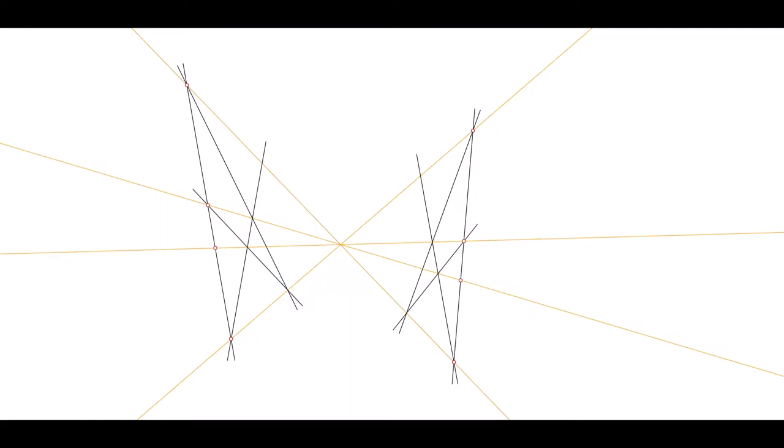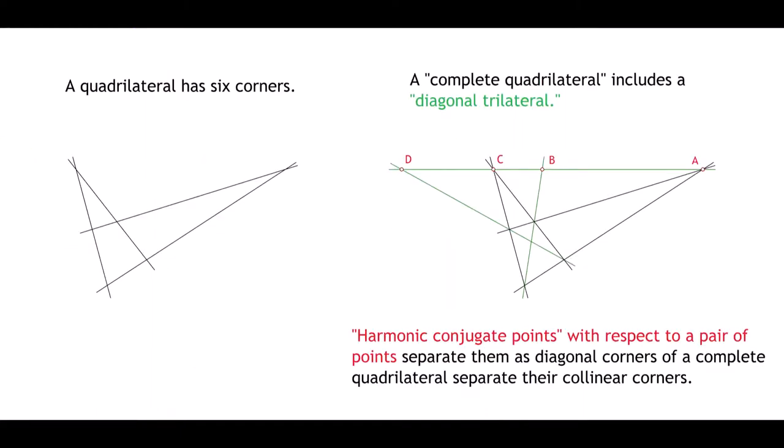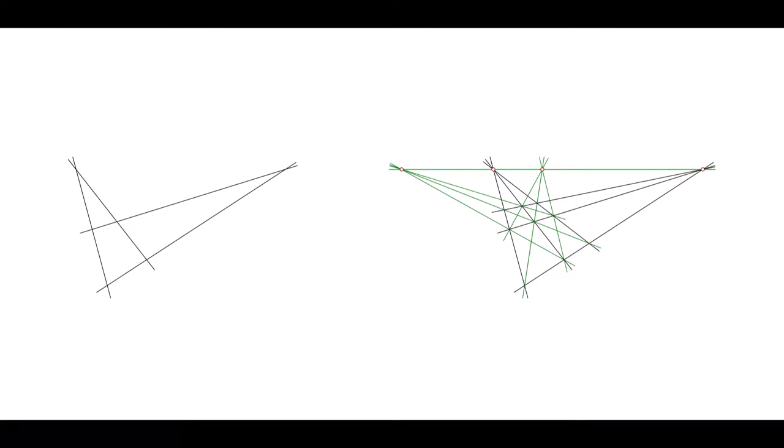We'll introduce projection the time after next. D is called the harmonic conjugate of B with respect to A and C. A and C are corners of a so-called complete quadrilateral, and B and D are the so-called diagonal corners, collinear with them. A draftsman's or Renaissance artist's definition of a harmonic range is the vanishing points and the diagonal vanishing points in two-point perspective.